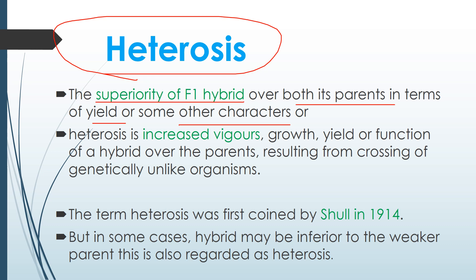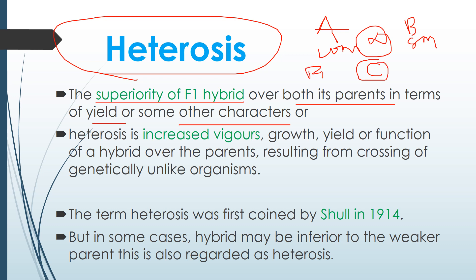For example, imagine two parents: Parent A of length 10 meters and Parent B of length 8 meters. When they cross, they result in offspring C — the F1 hybrid. If the length of the F1 hybrid is more than both parents, say around 13 to 15 meters, this superiority is called heterosis.